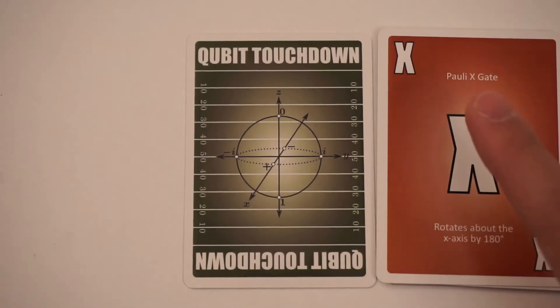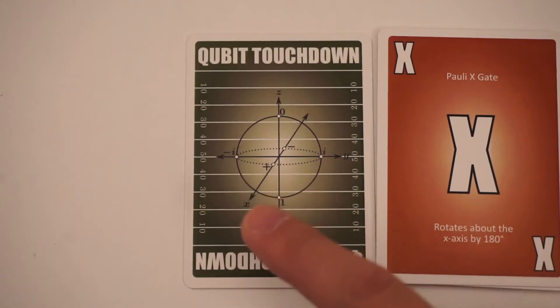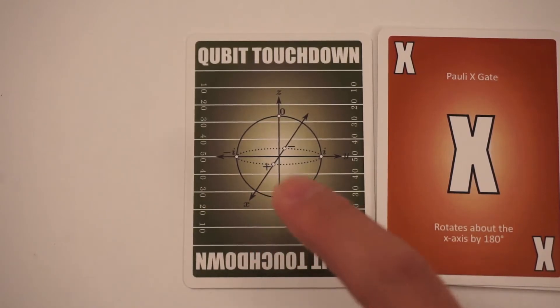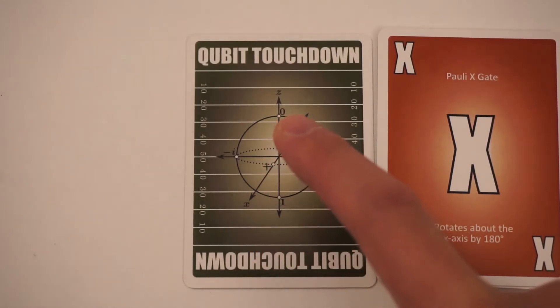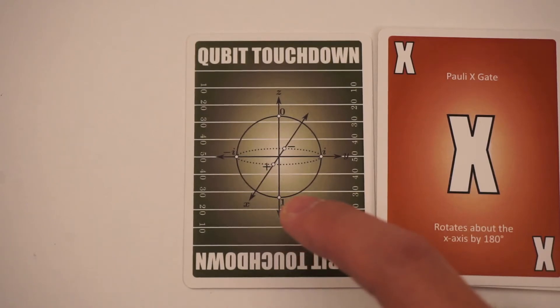So here this X card that they're playing, it's actually called the Pauli X gate. It's a quantum gate and it rotates about the x-axis by 180 degrees. So the x-axis is coming out of the page here. So let's say you have a qubit that's at zero. If you rotate around this x-axis by 180 degrees, you rotate all the way around and you end up at one.